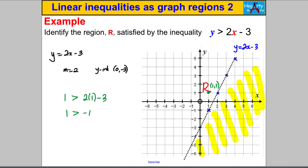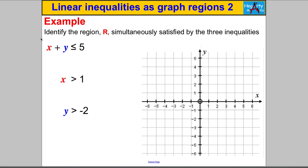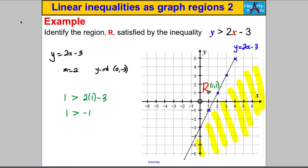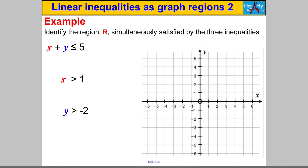In the next video, we'll tackle questions with three straight lines, identifying the region where all three inequalities hold simultaneously. That's where shading what you don't want becomes really powerful — instead of a messy overlapping picture, the desired region R is simply what's left unshaded. Check in for the next video to see this in action. Thanks for watching.